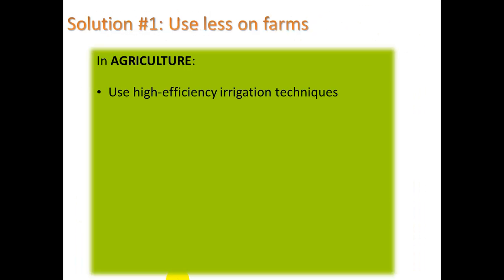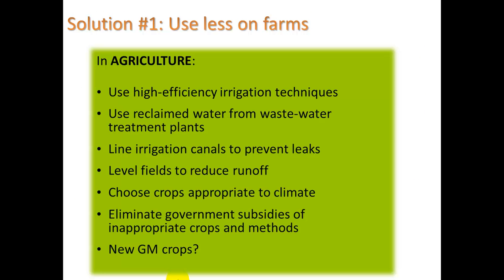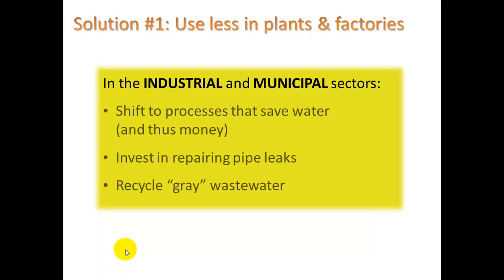On farms, you can use high-efficiency irrigation techniques like drip-line irrigation, reclaimed water from wastewater treatment plants with purple pipes, line irrigation canals to prevent leaks, level fields to reduce runoff, choose crops appropriate to the climate, and eliminate government subsidies of inappropriate crops and methods — meaning not giving money to grow crops that are expensive to produce. New GM crops that require less water are another option. In industry, shifting to more water-efficient processes saves both water and money. For example, local car washing stations recycle water as they wash cars.